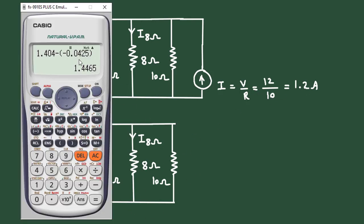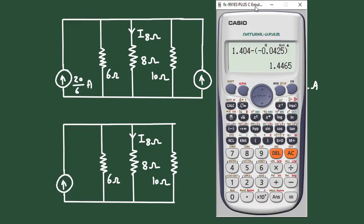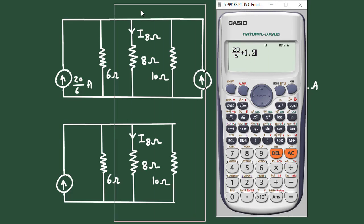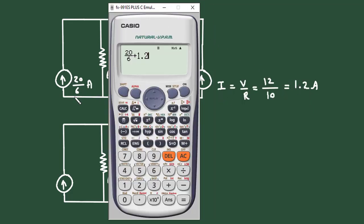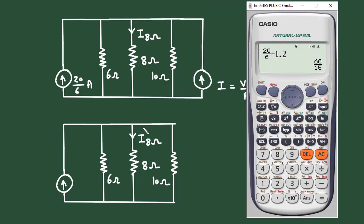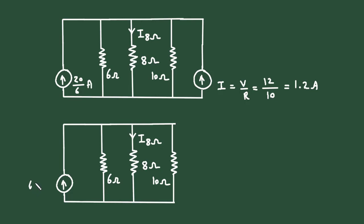When two current sources are connected in parallel and their directions are the same, they get added. So this will be 20 divided by 6 plus 1.2, which is equal to 68 divided by 15 ampere.